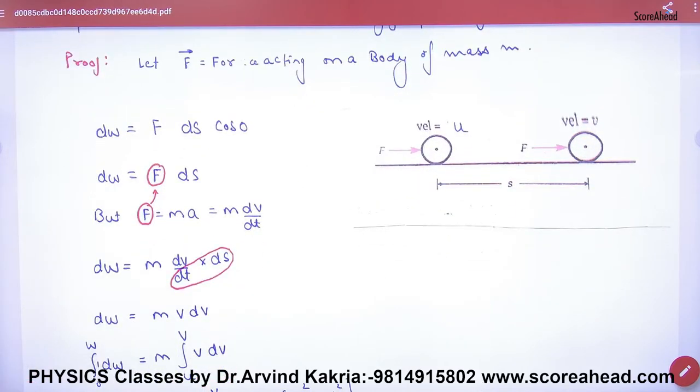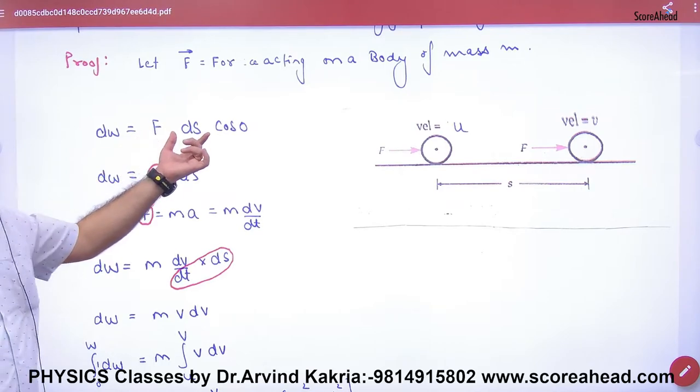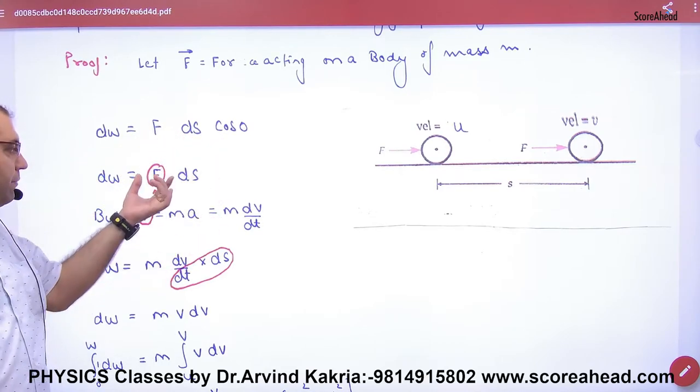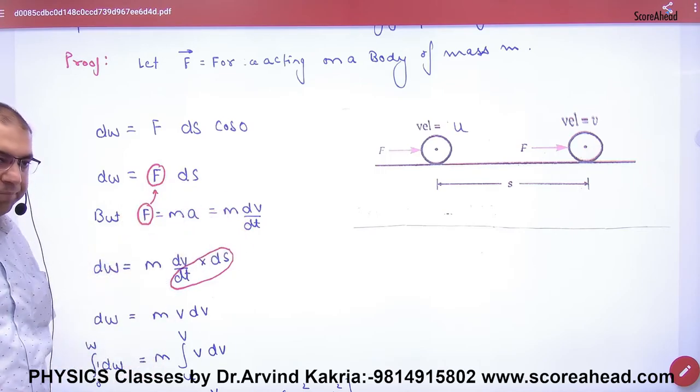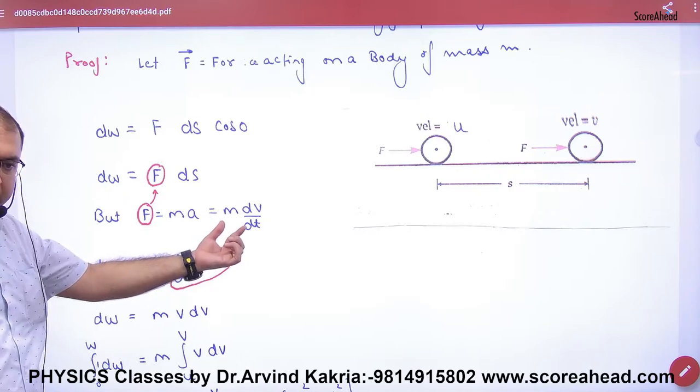What did we do? Small amount of work done dW = F ds. Then F = mass into acceleration = m × dv/dt. Same proof for kinetic energy.